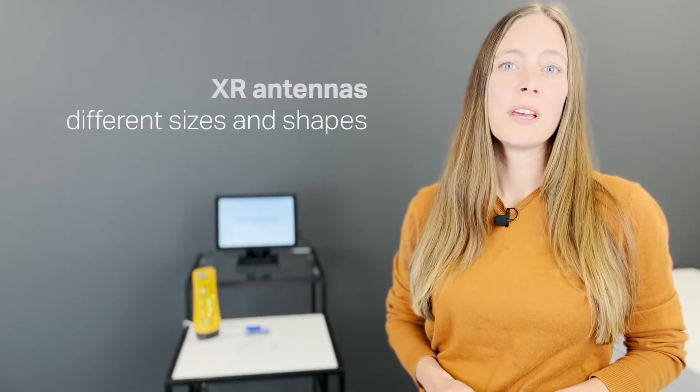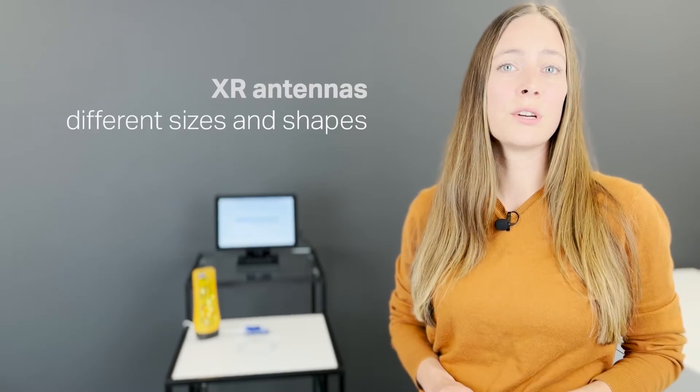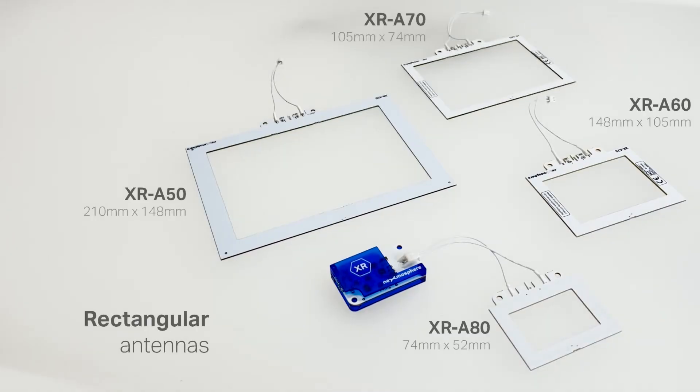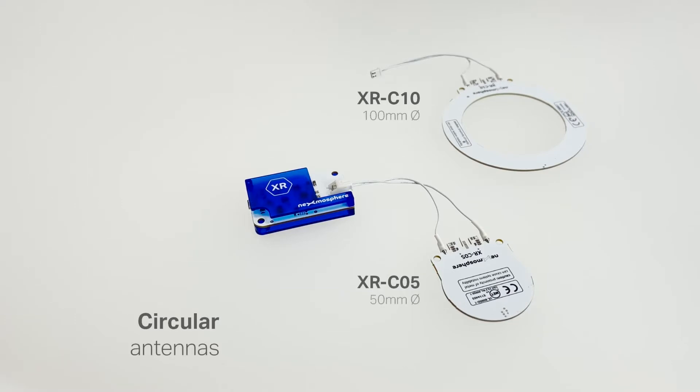They come in a range of different sizes and shapes to match the dimensions of the merchandise and shelves. Each antenna size has a specific detection range, varying between 24 and 42 mm from the antenna.